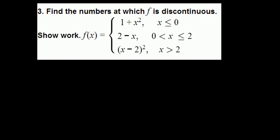In this question, f is defined by three different pieces, and each piece is a polynomial. The first piece is 1 plus x squared, which is continuous everywhere. The same applies to 2 minus x, and x minus 2 squared, which when expanded is also a second degree polynomial continuous everywhere. Since f is defined by three pieces, the key numbers to examine are x equals 0 and x equals 2, where the function changes shape.